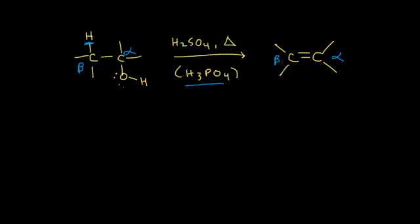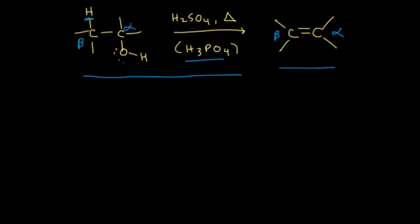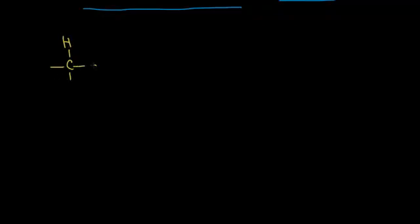If you are a flashcard person, you would put the reactants on one side and the product on the back. Now let's take a look at the mechanism steps of how this reaction occurs. We'll start with our alcohol, redraw it with the beta hydrogen, and put in the OH with two lone pairs of electrons on the oxygen.